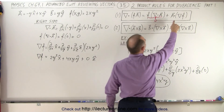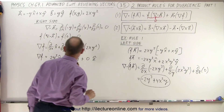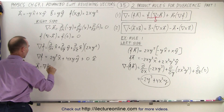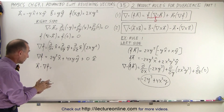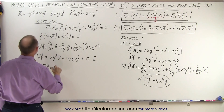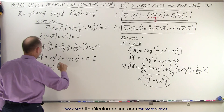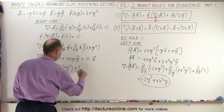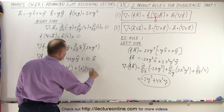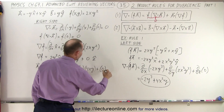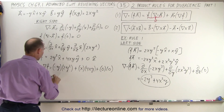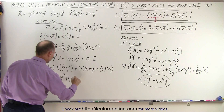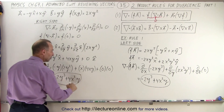Now we're going to take the dot product of the A vector and the gradient of f. This is equal to the product of the x components plus the product of the y components plus the product of the z components. That's minus y multiplied times 2y², plus x multiplied times 4xy, plus 0 times 0 — there are no z components. So this is going to be equal to minus 2y³ plus 4x²y.